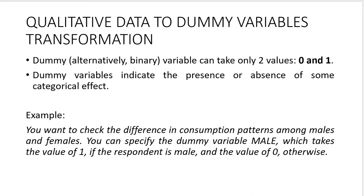Another option is the dummy variable. A dummy variable can take only two values — 0 or 1 — and in statistical analysis we use it to assess the existence of some categorical effect. For instance, you might hypothesize that males and females have different consumption patterns, but gender is qualitative data. You can specify a dummy variable called 'male': if the respondent is a man, this variable takes the value 1, and if not, it takes the value 0.